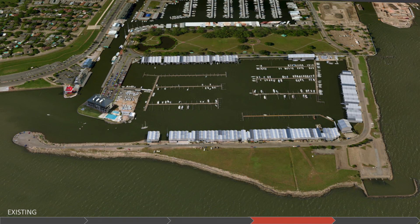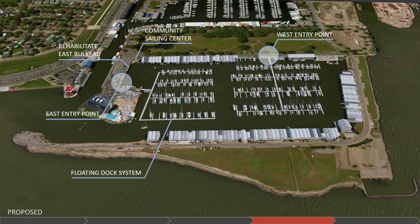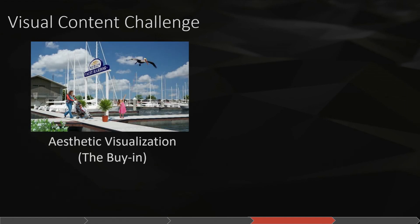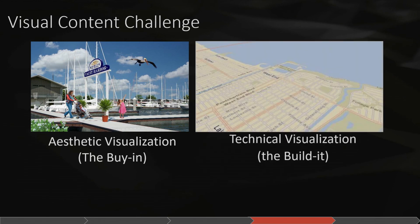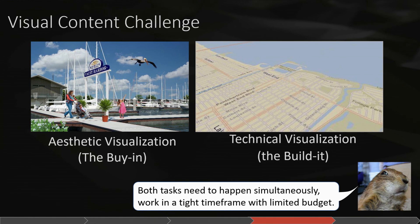This is how the marina looked prior to the hurricanes — even when it was functioning, it was pretty sparse and not utilizing the space very well. Here is our proposed master plan, calling out key features: two entry points, a community sailing center, and the east bulkhead that needed to be rehabilitated. Moffat Nickel was awarded the project and had an aggressive timeline with the city of New Orleans. It was critical for us to produce clear, convincing visualizations of the final design for stakeholders, city officials, and the public — what my sister calls the buy-in and the build-it.